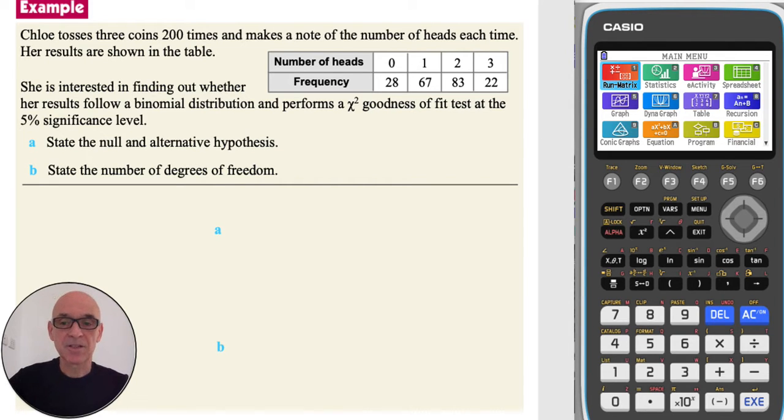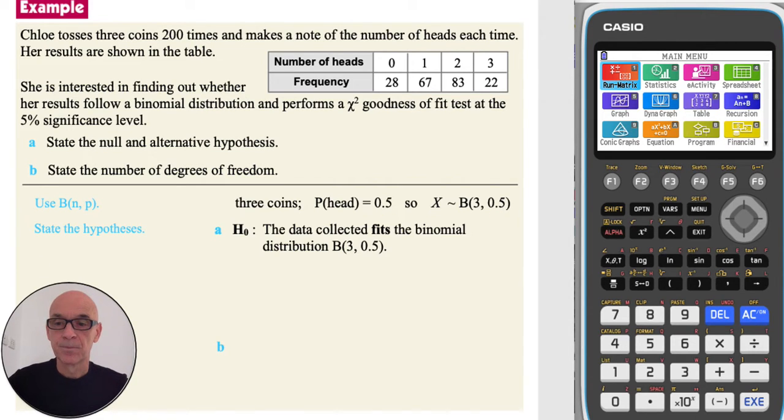In part A, we are asked to state the null and alternative hypothesis. For a binomial distribution, tossing three coins means that the number of trials will equal three and the probability of success getting a head on a coin is equal to 0.5. So the null hypothesis H0 is that the data collected does fit a binomial distribution with the binomial distribution stated.